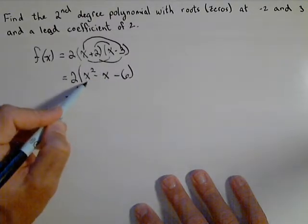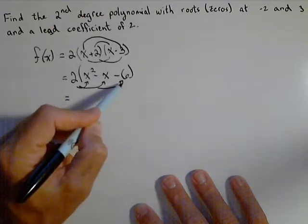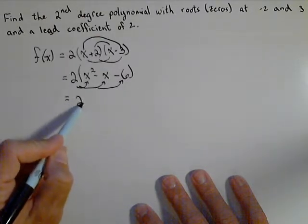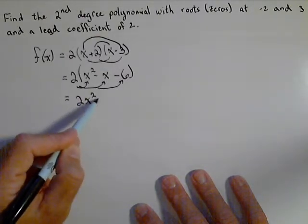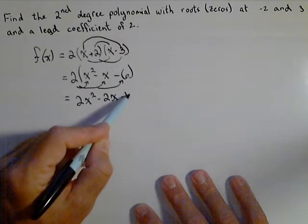And now we can distribute the two to all these terms, which would give us two x squared minus two x minus twelve.